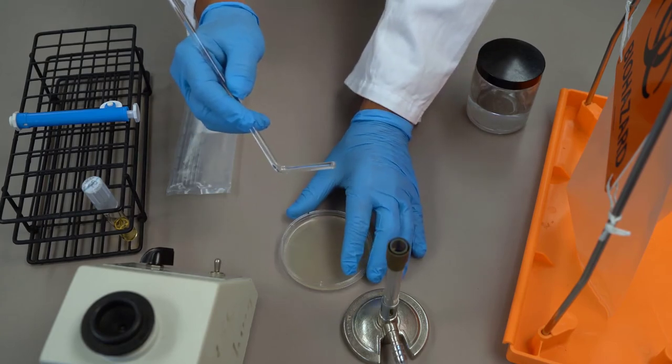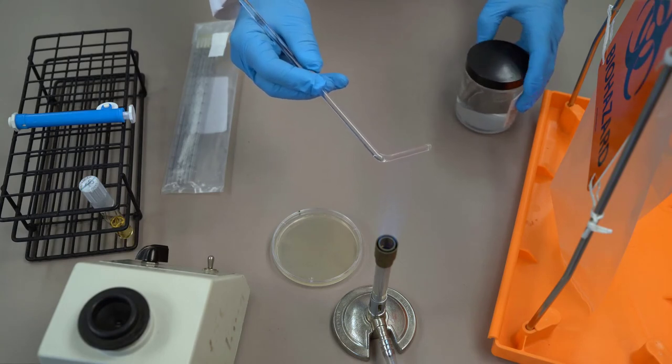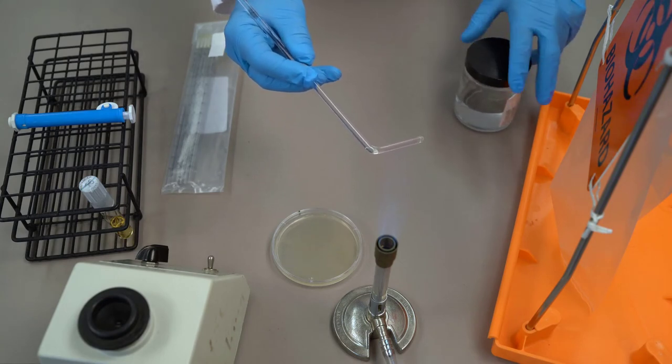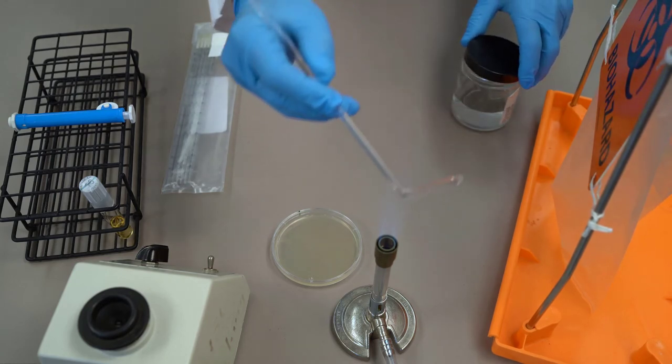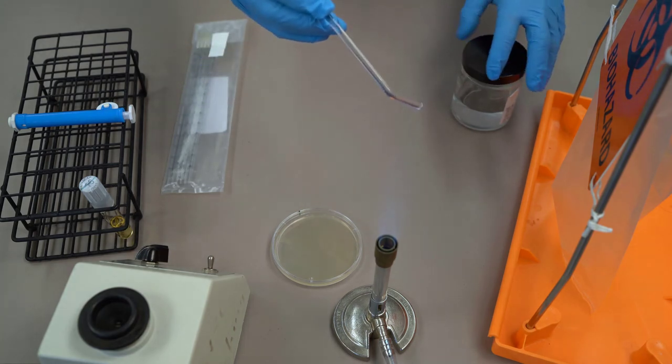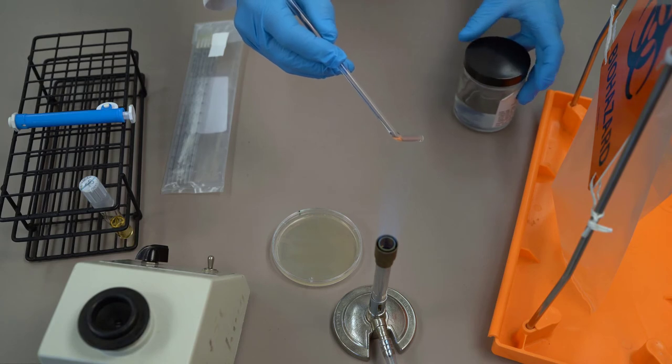We have to sterilize our glass rod because we now have bacteria on there from having spread it on the plate. We're going to dip that in alcohol, let the extra alcohol run back into the jar, and burn off the alcohol, keeping the spreader pointed down to prevent any burning alcohol from running back onto our hands.